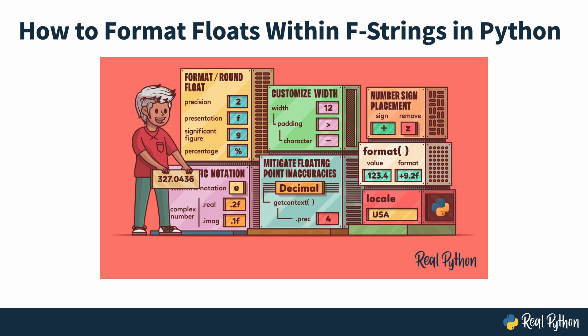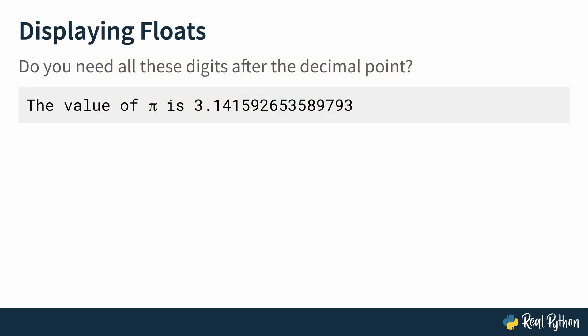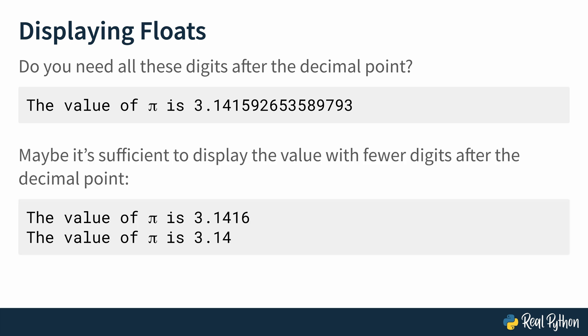Let me give an example. Let's assume you're dealing with a circle and you want to display the value of the mathematical constant pi. Possibly you may not want to display all of those digits after the decimal point. In many applications, it may be sufficient to show fewer digits — for example, 3.1416, or maybe just 3.14. You can do this with f-strings, and this is what we're going to be looking at in the next lesson.